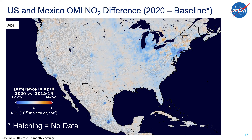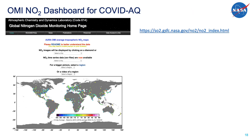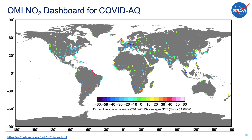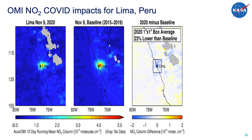These changes in NO2 emissions can be correlated with traffic and mobility data collected by Google and Apple based on people's cell phone movements. For the last part of my talk, I want to familiarize you with the NASA OMI NO2 dashboard for COVID air quality data. One of the most exciting features is that it updates every day — the difference between 2020 and the five-year baseline is calculated for hundreds of cities around the world, and the color of each city's symbol represents the percent change in NO2 for 2020. If you click on Lima, Peru, you would see three maps: the current 2020 15-day average, the baseline map for the same days, and the difference plot. NO2 levels inside a one-degree by one-degree box around Lima are 23% lower for 2020.